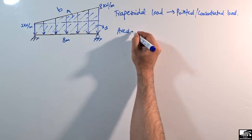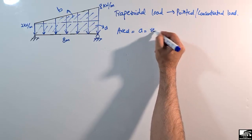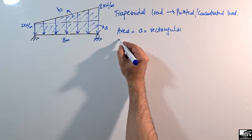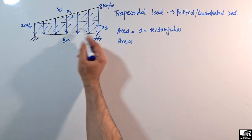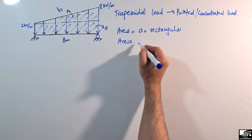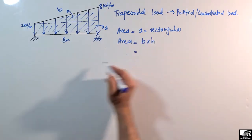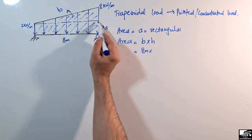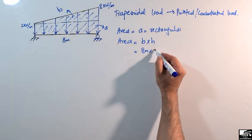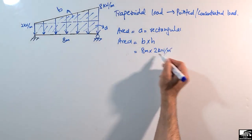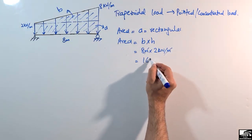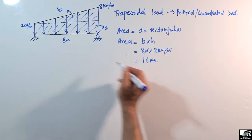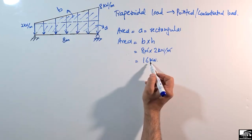First, find the area of Part A — the rectangular part. The area of a rectangle equals base times height. The base is 8 meters and the height is 2 kN/m, so the units of meters cancel, giving us 16 kN. This is the pointed load converted from the rectangular part.